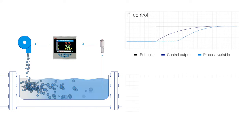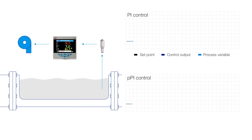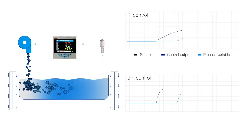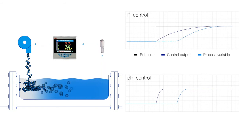ABB's ControlMaster series of controllers feature an easy-to-use dead time compensation function called predictive PI control, or PPI control. By predicting the pH value that will result from a change in additive dosing, PPI control can respond to process disturbances much faster than traditional control methods, without the fear of overdosing or instability.